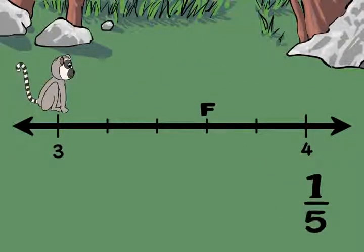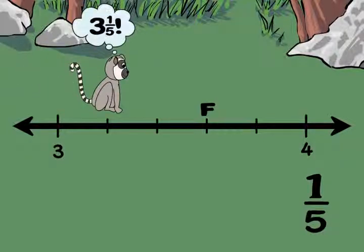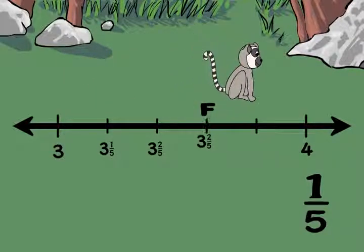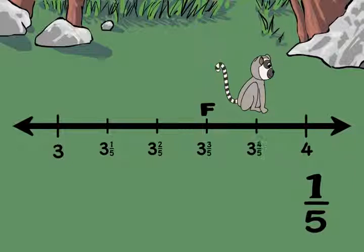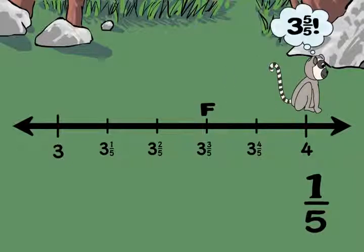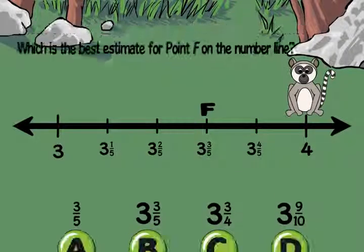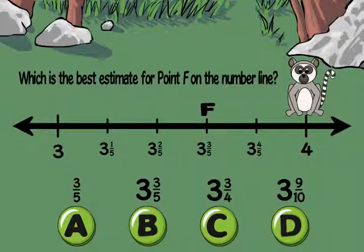We still have to do step three. Let's skip count by fifths from three to label each mark. Three and one-fifth, three and two-fifths, three and three-fifths, three and four-fifths. Three and five-fifths is the same as four. Now you can see that point F is at three and three-fifths. So the best choice is B, three and three-fifths.